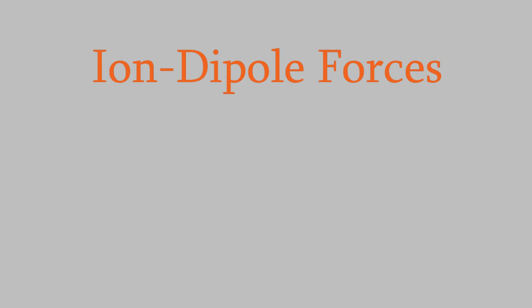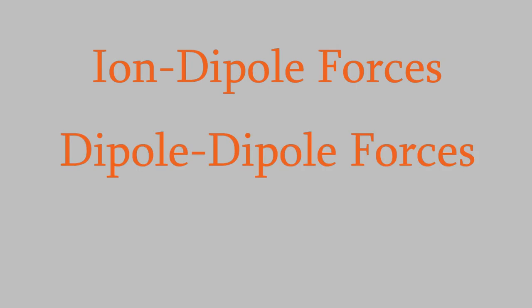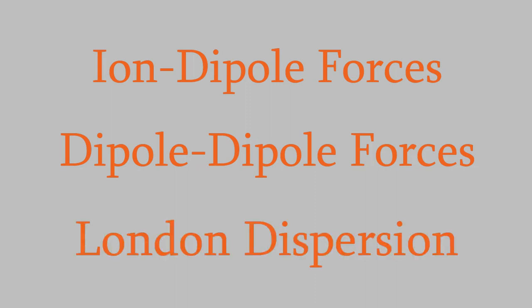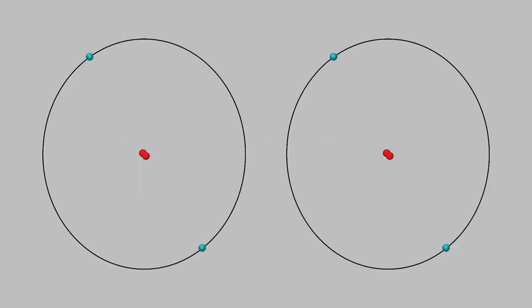Both ion-dipole and dipole-dipole forces are stronger than the last kind of intermolecular force, which is called London dispersion. To understand London dispersion, imagine two helium atoms. Both of them have two protons and two electrons, so they're neutral overall. It seems like they shouldn't attract each other at all — and it's true that the attraction between them is very minute. But it isn't zero.